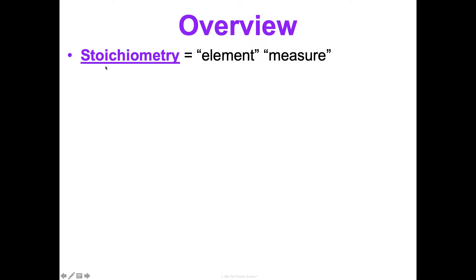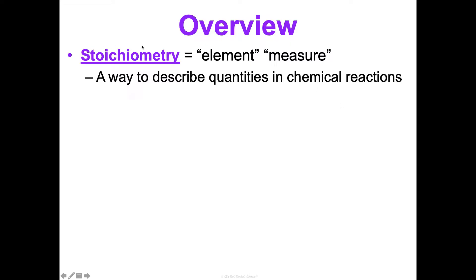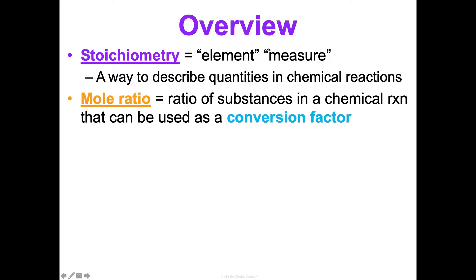So stoichiometry — that term literally breaks down to mean element measure. Stoic is just a way to describe quantities in chemical reactions. So measurements of elements in chemical reactions — that's what we're doing here.